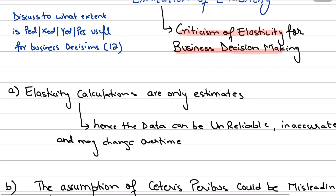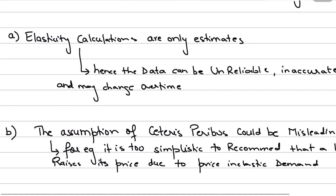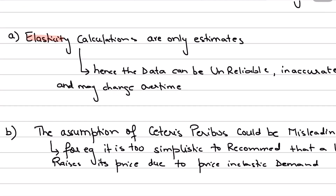Let's jump straight into the limitations. When you're criticizing elasticity - whether it is PED, XED, YED, or PES - we're talking about all sorts of elasticity. Elasticity are these calculations, the coefficient calculations. They're only, first of all, estimates. That is the first limitation - that they are estimates.